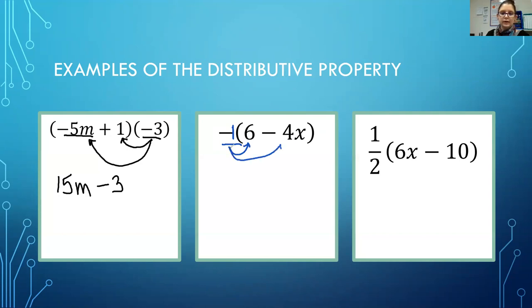Drawing my arrows, I'm going to underline all of this. So negative 1 times 6 is a negative 6. Negative 1 times negative 4 is a positive 4. Bring down my x.